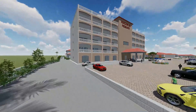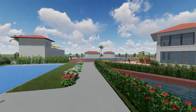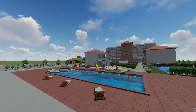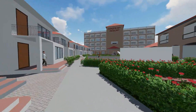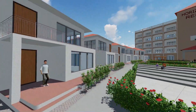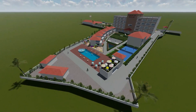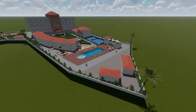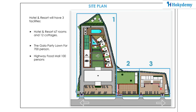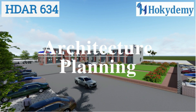Welcome to Hokidemi. In this course you will learn master planning of a hotel resort and food court on a 10,000 square meter plot — featuring a hotel with 67 rooms and 12 cottages, a party lawn for 700 guests, and a highway AC food court with 100 seating. Amenities include gym, mini-plex pool, steam sauna, café, conference room, yoga, meditation, and a Burj Al Arab-themed landscape with amphitheater and kids' play area.